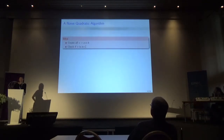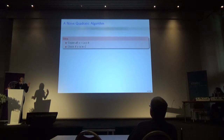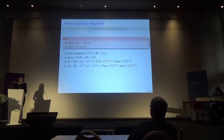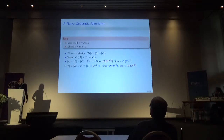The first main approach to solve this problem is to compute all pairwise sums of elements from A and B, and directly check if that sum is in the last list C. If it is not, we discard it and compute the next term. The time complexity of such an algorithm is as shown, and the space complexity is basically proportional to storing the lists.